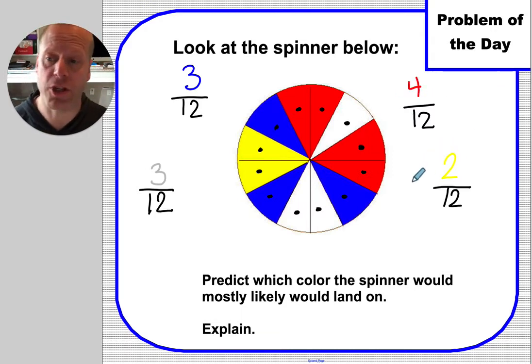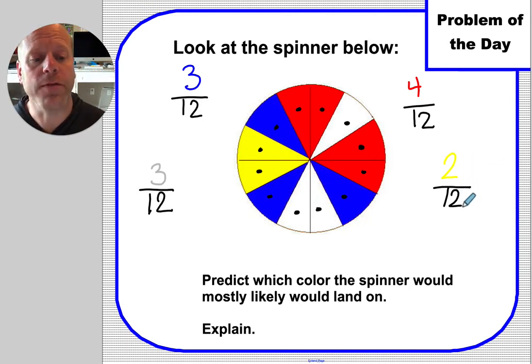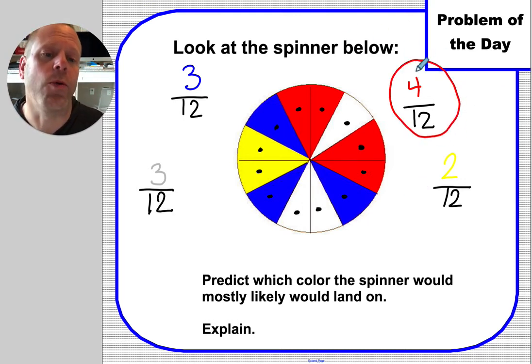So what these fractions are telling you is that 2 out of 12 times, it's going to land on the yellow. 4 out of 12 times, it's probably going to hit one of these reds. 3 out of 12 will be blue, and 3 out of 12 will be white. So what color would it land on most of the time? Well, 3 12ths, that's 3 pieces of this pizza. 3 pieces of the pizza. 2 pieces of the pizza. I definitely think that this one right here, red, is the one that it's going to be most of the time.